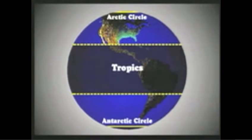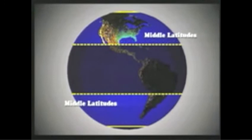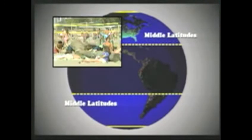The areas between the tropics and the Arctic Circle and the Antarctic Circle, those in the so-called middle latitudes, generally have more seasonal weather, with a summer, fall, winter, and spring each year.